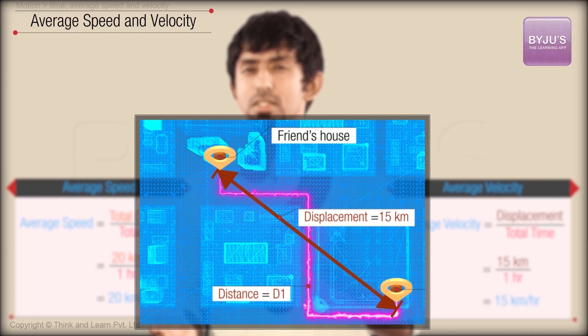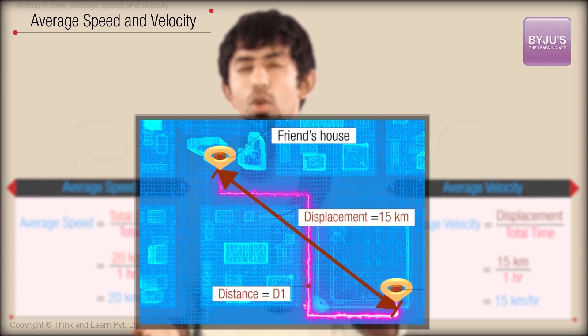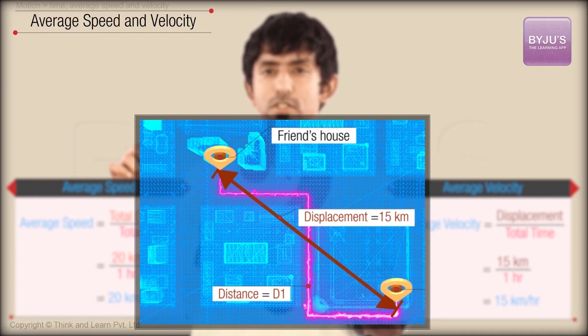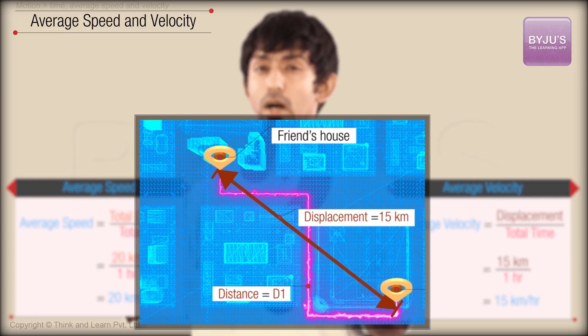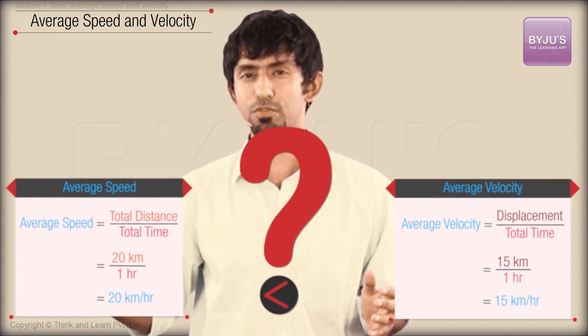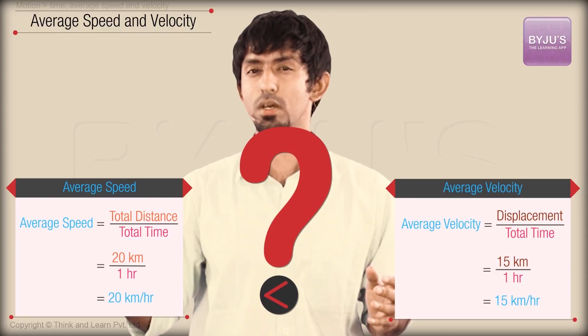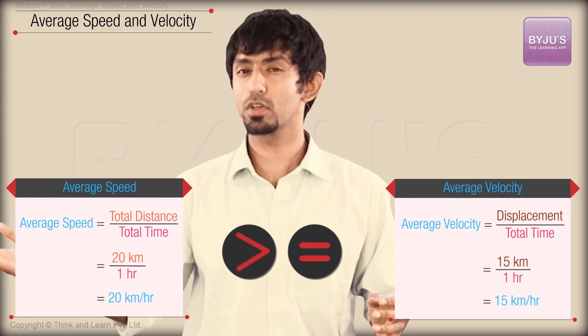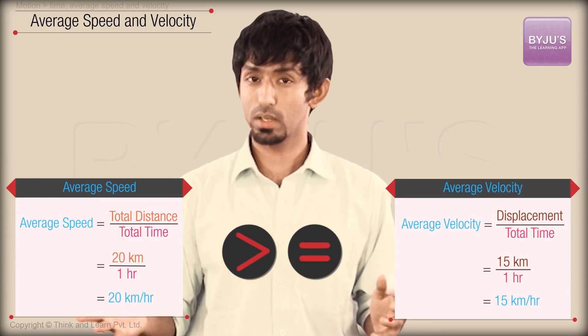That's like asking: can the distance ever be lower than your displacement? Of course not — if you're going between two points, the distance is going to be greater than or equal to your displacement. Therefore, your average speed must be greater than or equal to your average velocity.